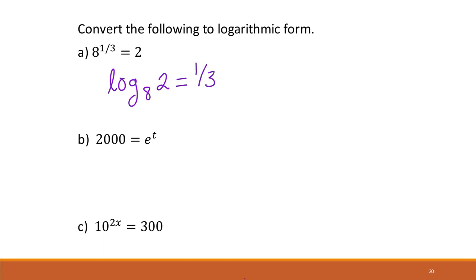Same thing here — we're using e, so we're going to take the natural log of 2,000 to give us t. On this last one, this is the common log because it's base 10 in the exponent portion. So we're going to have log 300 equals 2x.